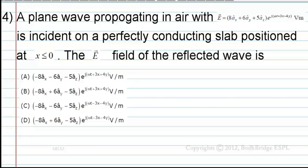A plane wave propagating in air with E-field given as 8ax + 6ay + 5az multiplied by e^(jωt + 3x − 4y) V/m is incident on a perfectly conducting slab positioned at x ≤ 0. The E-field of the reflected wave — option A — is: −8ax − 6ay − 5az multiplied by e^(jωt + 3x + 4y) V/m.